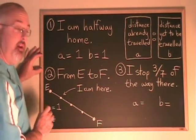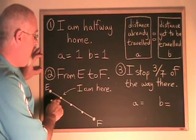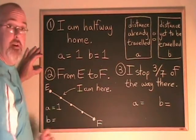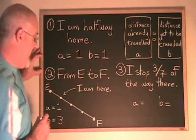And the b, the distance I have to travel still from this point to f, is three units. My a is one, my b is three.